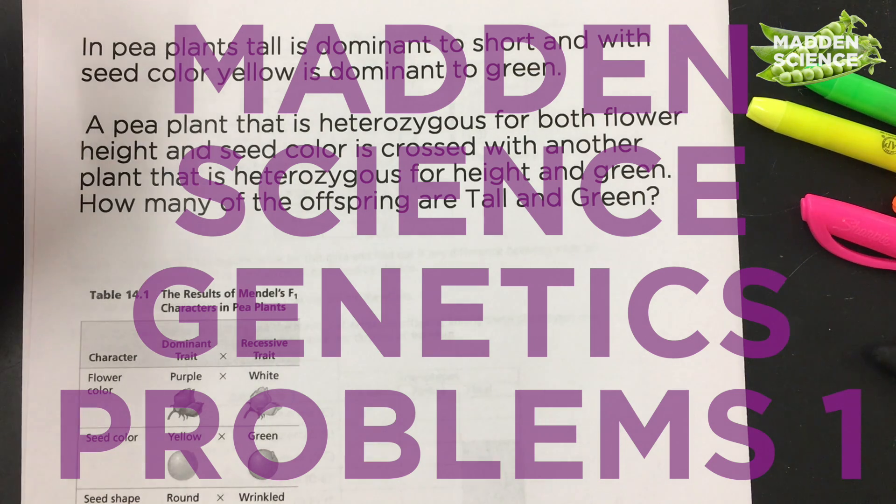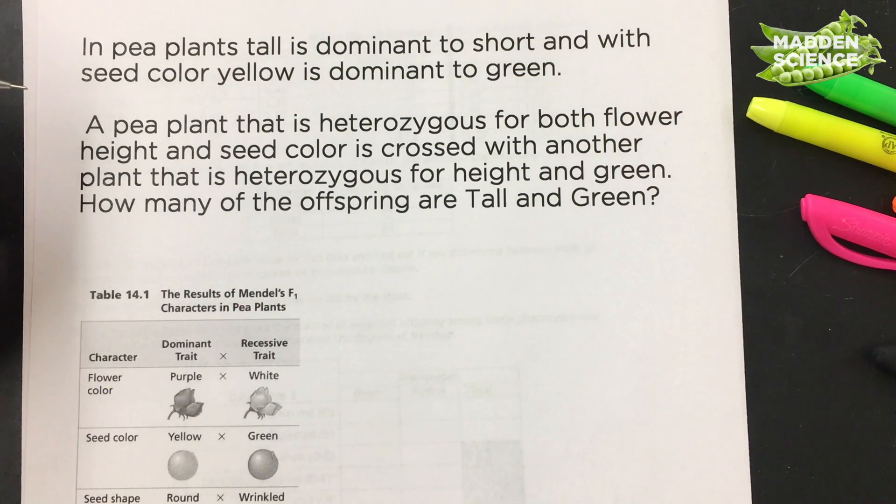Hey everybody, welcome to Madden Science. We're going over some AP biology problems today dealing with genetics. We've got some pea plants, looking at chi-square analysis, also a little bit of sickle cell.